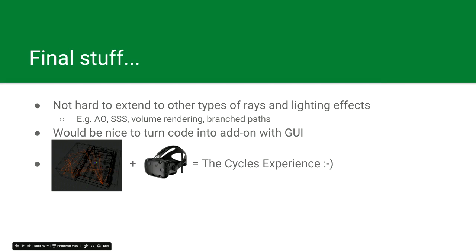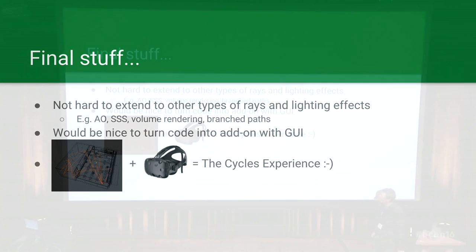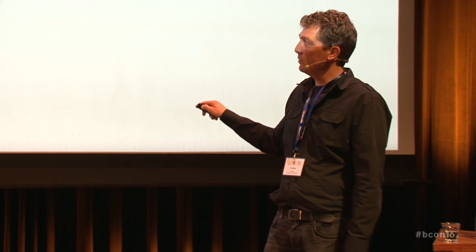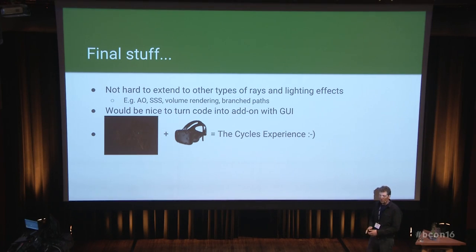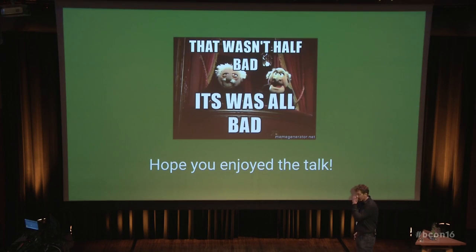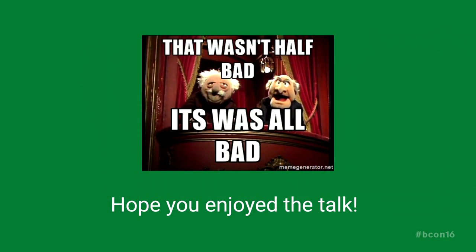So I did this for two simple pass types: the basic primary paths and shadow rays. It wouldn't be hard to add more ray types like ambient occlusion or subsurface shading. It would be nice to have a little GUI with buttons to query the data rather than just Python code. And something I thought of but didn't have time for: it would be fun to use an HTC Vive headset and have a scene with rays flying around your head — call it the Cycles Experience — maybe even turn it into a game where you catch rays. That's it. I hope you enjoyed it.